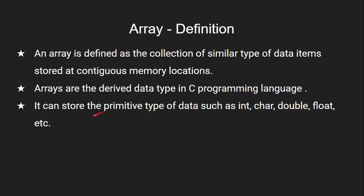An array can store primitive data types such as int, char, double, or float. That means there can be an integer array, character array, double array, or float array.